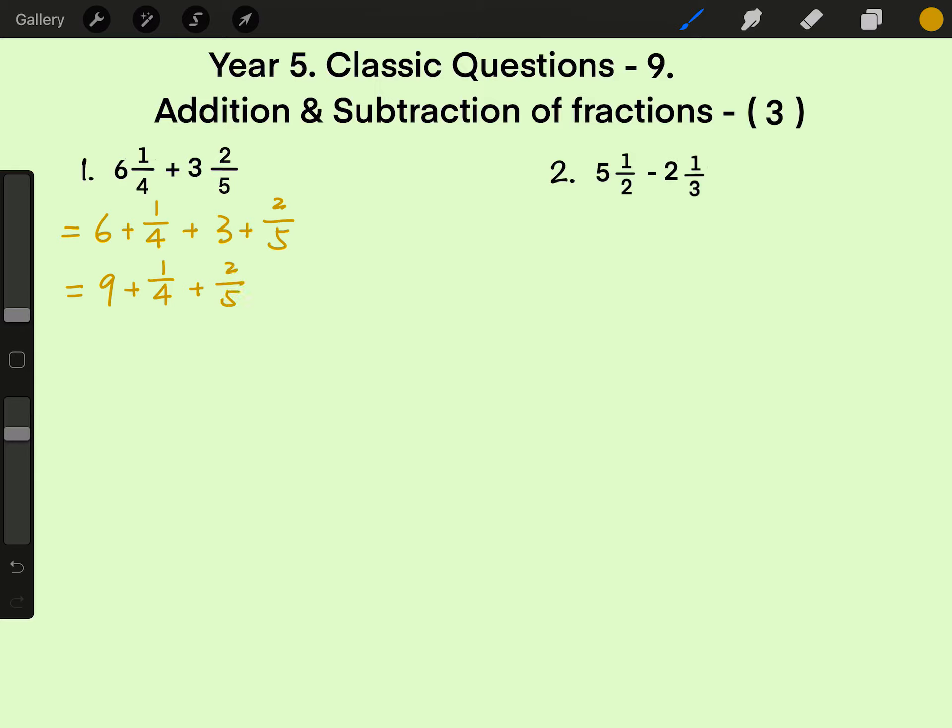Next, make the different denominators the same. 4 times 5 is 20. So for 1 quarter, denominator 4 times 5. At the same time, numerator must times 5.